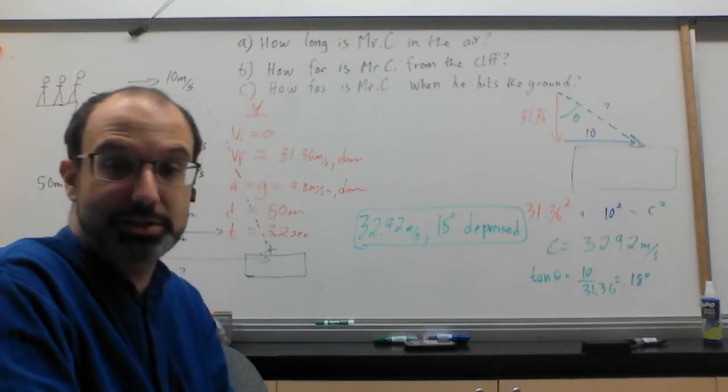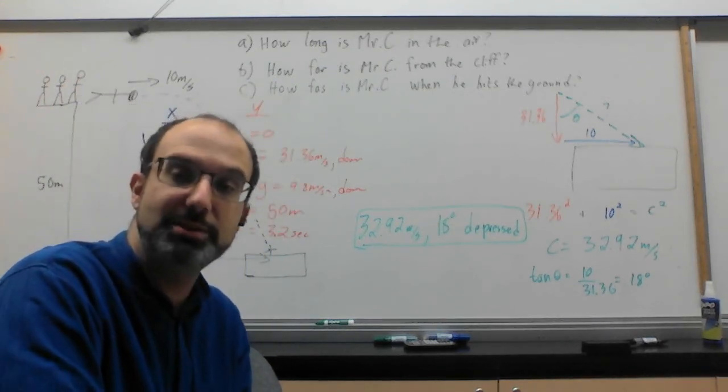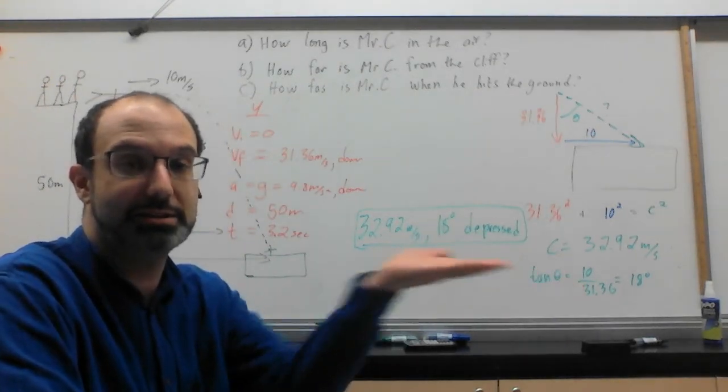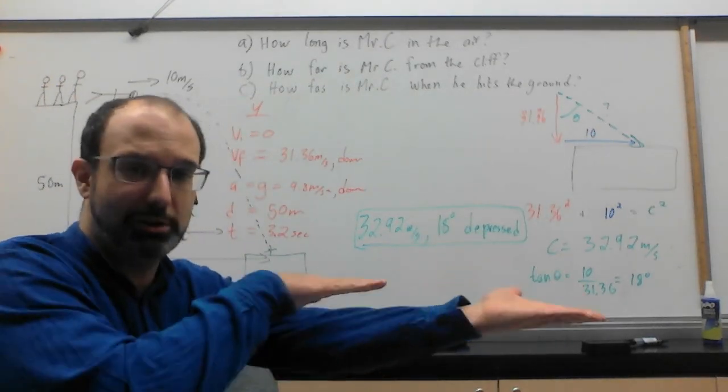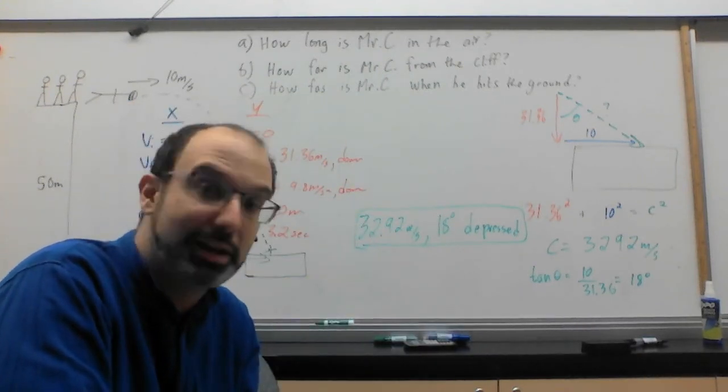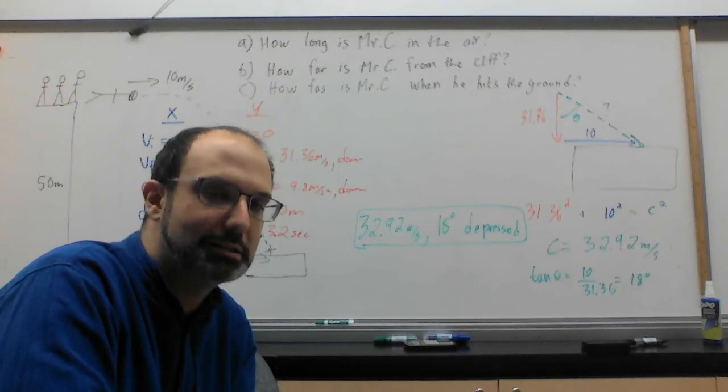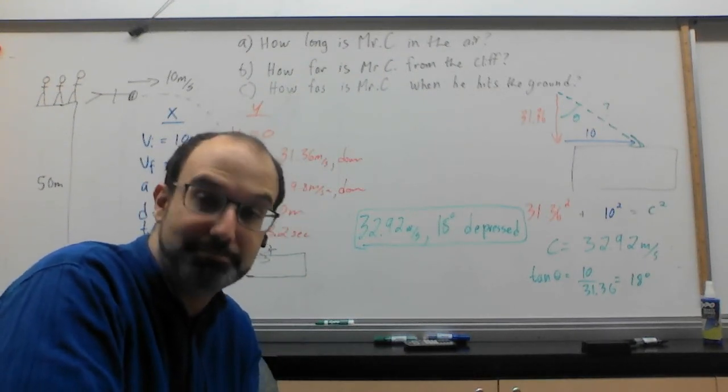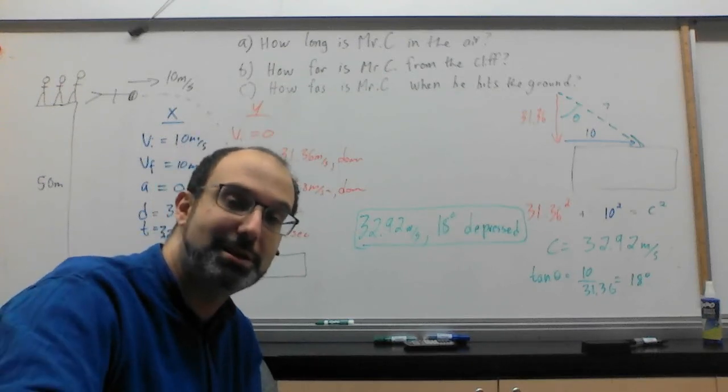I'm going to leave it there. This is the type one problems. The next video will show you how to do the type two problems, which again, reminder, is launch and land at the same height. So launch and land like this, we come up, we come back down. And we already kind of know how a lot of this is going to work. It's symmetric, so you get to cheat a little bit. You get to use a lot of little shortcuts in order to solve everything a lot easier. But I will leave that for next time.